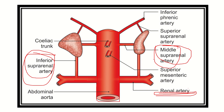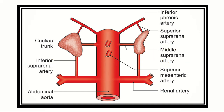To summarize the arterial supply: the superior suprarenal artery arises from the inferior phrenic artery, the middle suprarenal artery arises from the abdominal aorta, and the inferior suprarenal artery arises from the renal artery. These names and their origins are very important to memorize.